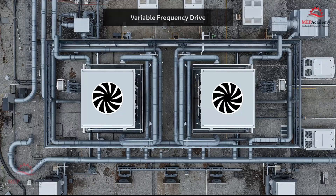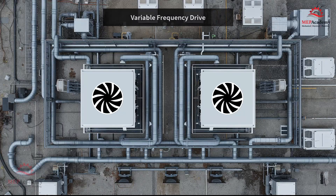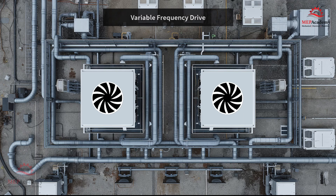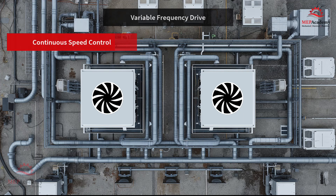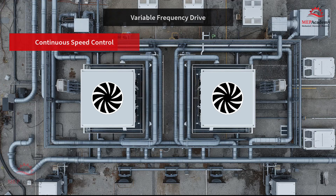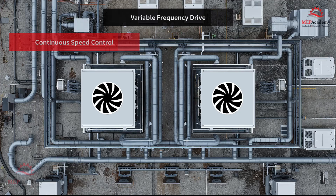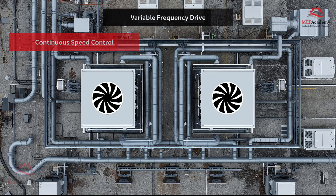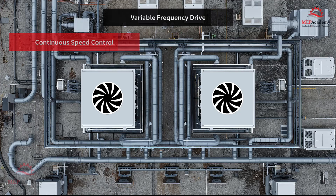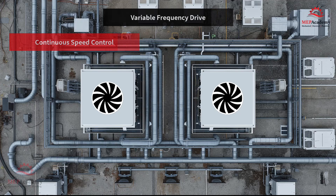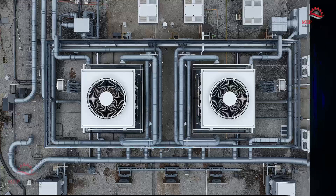And finally, the most efficient option: the variable frequency drive, or VFD. A VFD gives continuous speed control, letting you run fans at exactly the RPM needed to hold your set point. By taking full advantage of the cube law, VFDs deliver the lowest energy consumption, quieter operation, and smoother control. The upfront cost might be slightly higher, but lifecycle savings almost always pay it back.